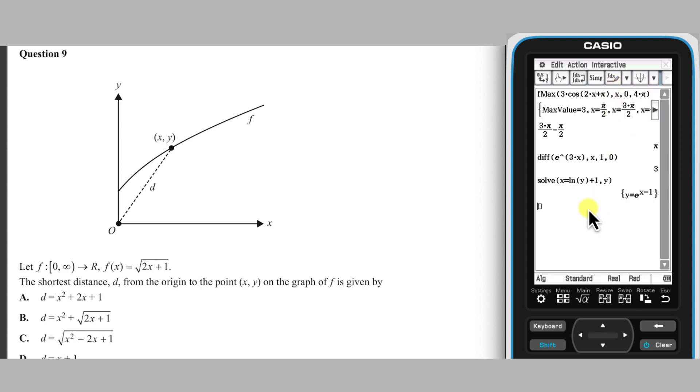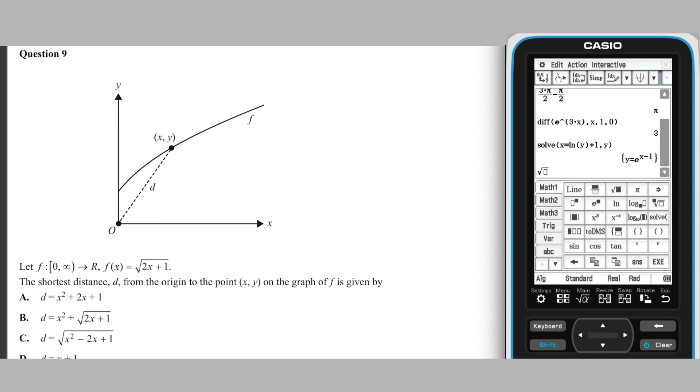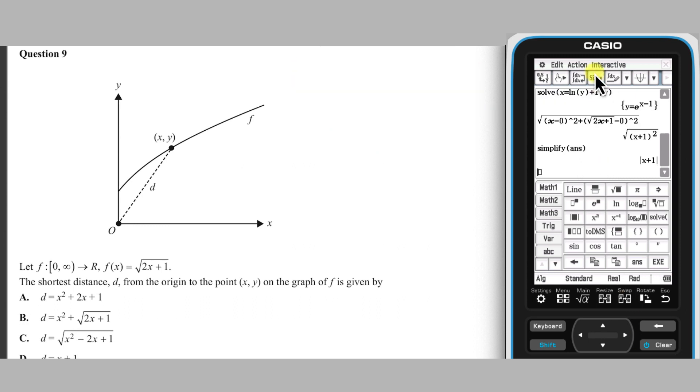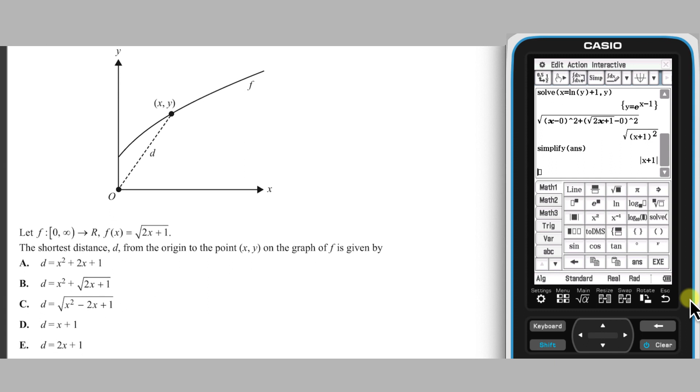In the main app, enter this as the square root of x minus 0 all squared, plus the root of 2x plus 1 minus 0 all squared. The ClassPad simplifies this to the modulus of x plus 1. As x is positive in this question, this is equivalent to answer d.